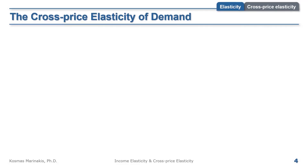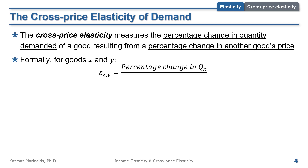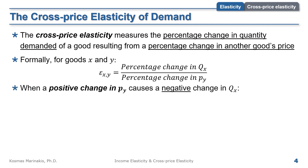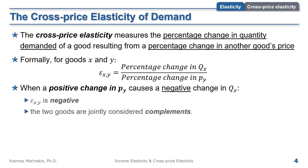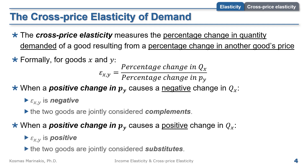Let's examine the cross-price elasticity of demand. The cross-price elasticity measures the percentage change in quantity demanded of a good, resulting from a percentage change in another good's price. Formally, for two goods x and y, the cross-price elasticity is the ratio of the percentage change in quantity of good x over the percentage change in price of good y. When a positive change in the price of good y causes a negative change in the quantity of x, the cross-price elasticity is negative, meaning the two goods are complements. When it causes a positive change in qx, the cross-price elasticity is positive and the goods are substitutes.